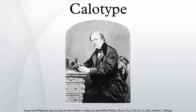In late 1840, Talbot worked out a very different developing-out process, in which only an extremely faint or completely invisible latent image had to be produced in the camera — which could be done in a minute or two if the subject was in bright sunlight. The paper, shielded from further exposure to daylight, was then removed from the camera and the latent image was chemically developed into a fully visible image.